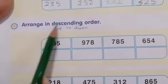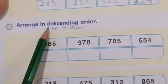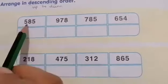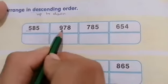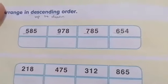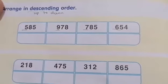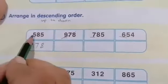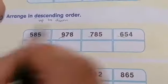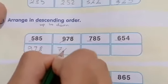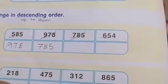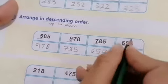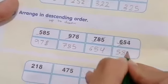Question number 2: arrange in descending order — from the biggest number to the smallest number. We have hundreds digits 5, 9, 7, 6. Which is the biggest? Excellent — 9. So 978 is first. Then 7 — so 785 is next. Then 6 or 5? Excellent — 654. And the last one is 585.